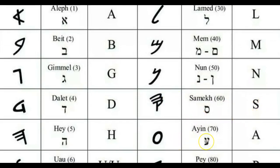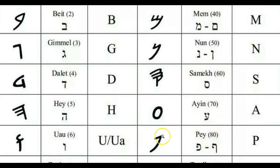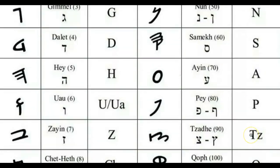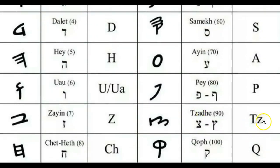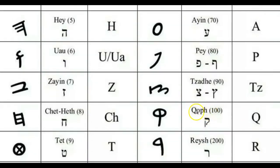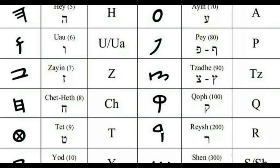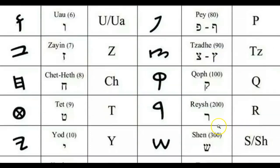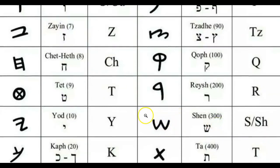The Ayan, or Ayin, makes the A sound. Then we have the Pa, or Peh, which means mouth, word, or speak, making the P sound. The Tzad makes the Tz sound and looks like a fish hook. The Coop makes the Q sound and represents behind or sun on the horizon. The Rash represents the chief or first and makes the R sound. The Shon looks like teeth, means to consume or destroy, and makes the SH sound.